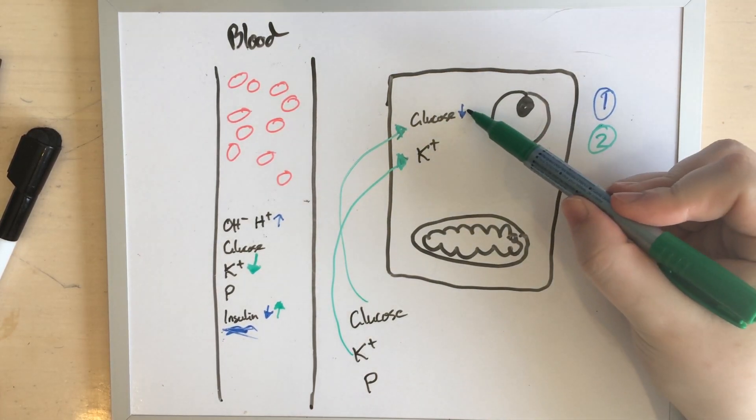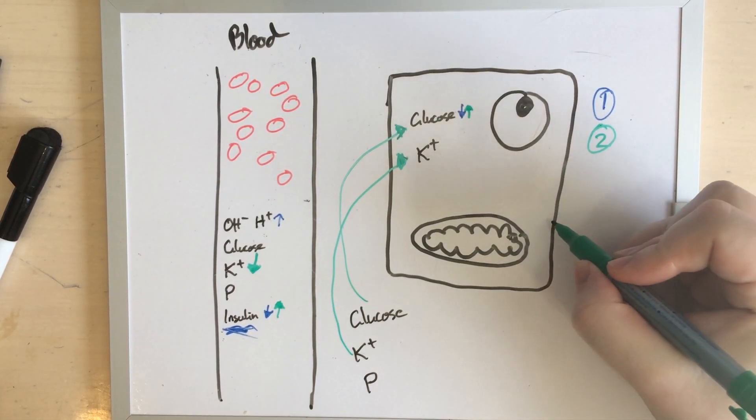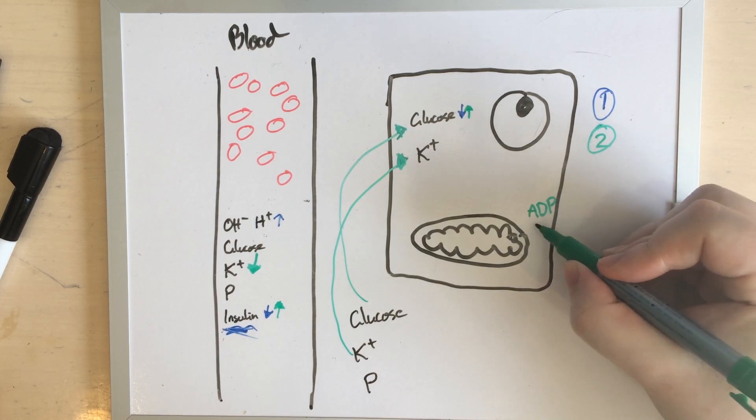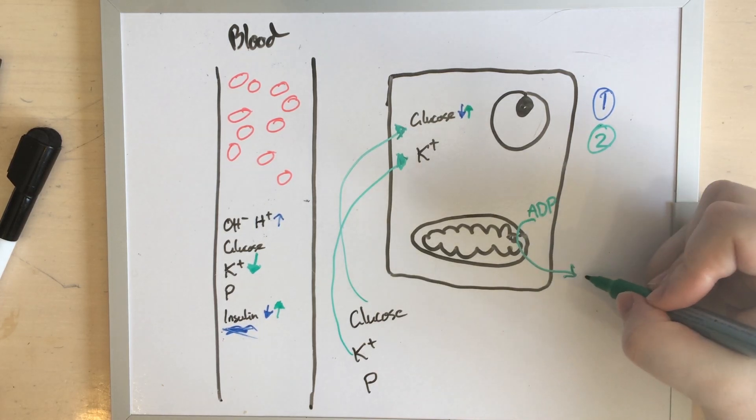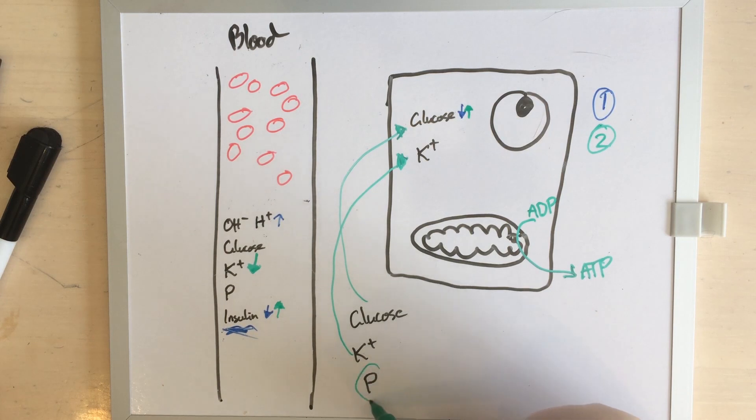At least now we've got glucose in our cell, which is where our cell wants it to be so that it can make energy. And on a cellular level, that means turning a molecule called ADP, which has two phosphoruses, into ATP, which has three phosphoruses, which means you suddenly have a lot less phosphorus floating around.